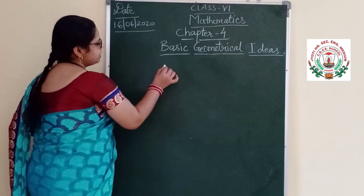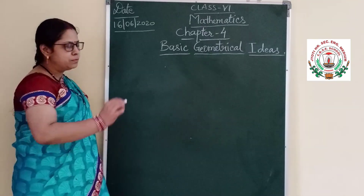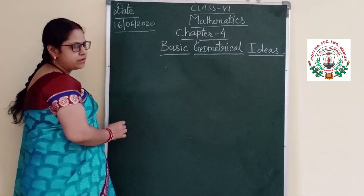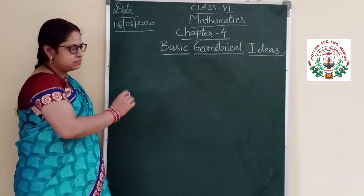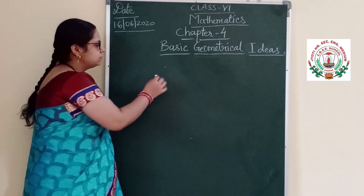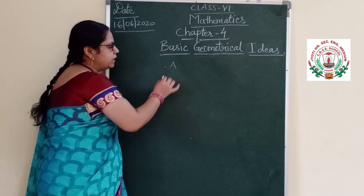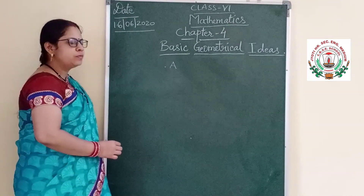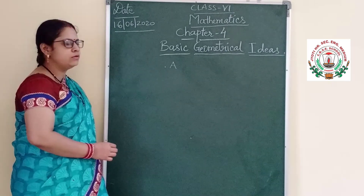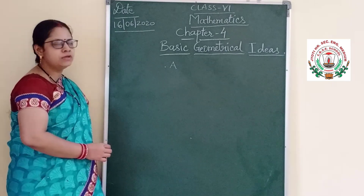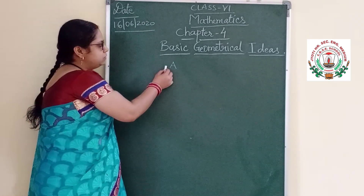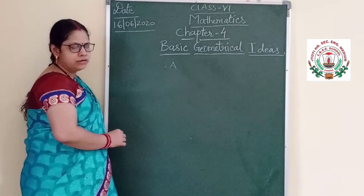A point is anywhere if I drop one point. A point everyone can understand. This is a point. For denoting this point we need something — it is denoted by a capital letter. Suppose capital A, capital B, or capital X, Y, Z — any of the alphabets. In capital letter, we use to denote this point.